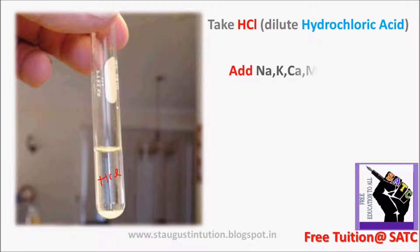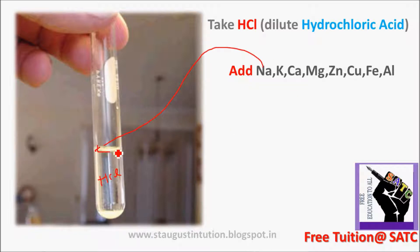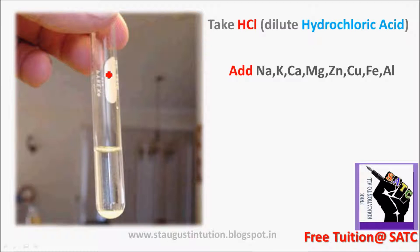Let's take a test tube. The metals we will test are: Sodium, Potassium, Calcium, Magnesium, Zinc, Copper, and Iron. First, we will take sodium. Let's take a test tube, add HCl hydrochloric acid, and add sodium.